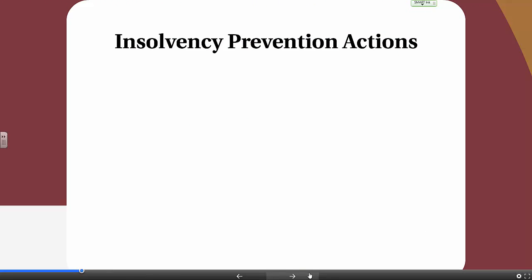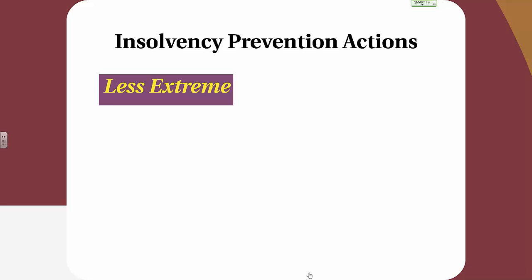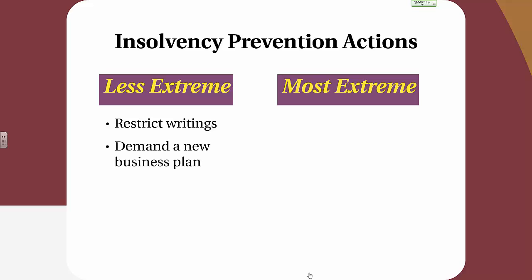Let's look at some of the insolvency prevention actions an insurance department takes when there's a risk that one of the companies it regulates might be insolvent. Starting with the least extreme: first, restrict writings. If a department of insurance sees that an insurance company is having problems in a particular territory or line of business, they might restrict their writings in that area but not affect other territories or lines. If the problem isn't resolved, they might demand a new business plan, requiring the company to submit new plans with respect to underwriting, rating, possibly marketing, and claims.